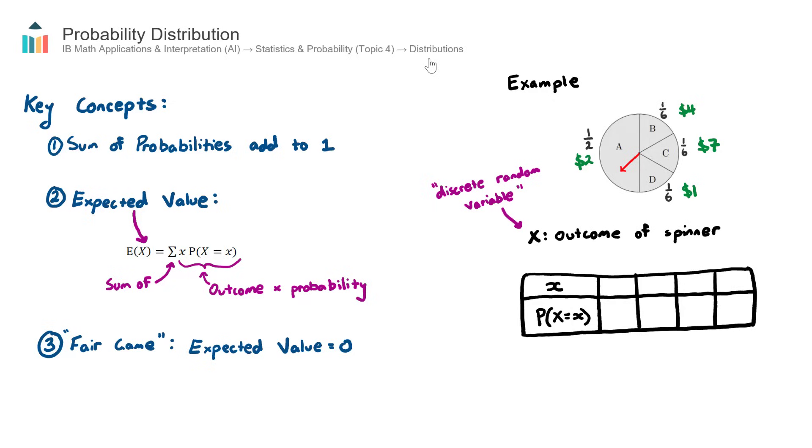In the AISL course, we'll encounter three types of distributions: probability distribution, binomial distribution, and normal distribution. In addition, for the HL course, we also have Poisson's distribution. But in this video, we are looking at probability distribution.